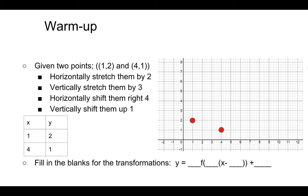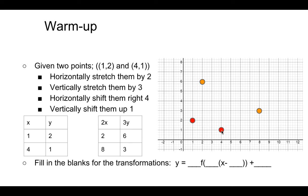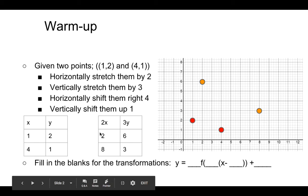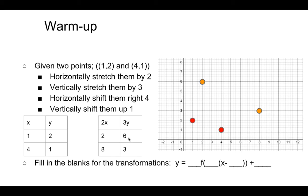First, it says to horizontally stretch by a factor of two — so we pull them away from the y-axis. Instead of x equals four, we have x equals eight, and instead of x equals one, we have x equals two. At the same time, we vertically stretch by tripling: a height of two becomes six, and a height of one becomes three. So the x values are multiplied by two and the y values are multiplied by three.